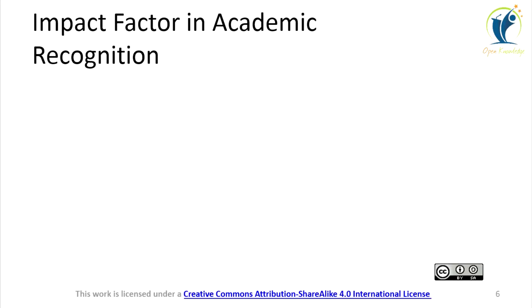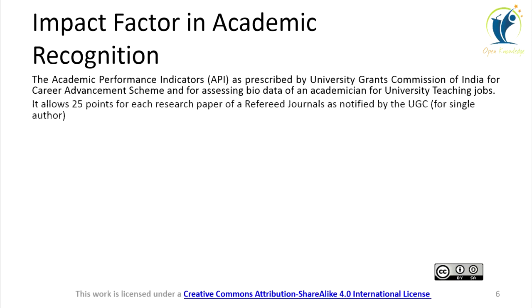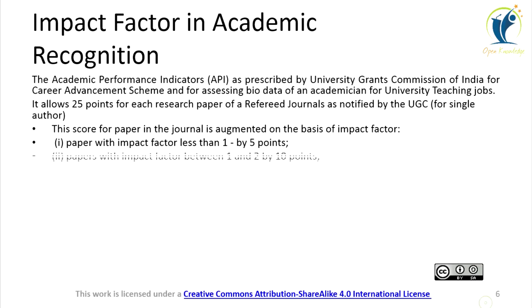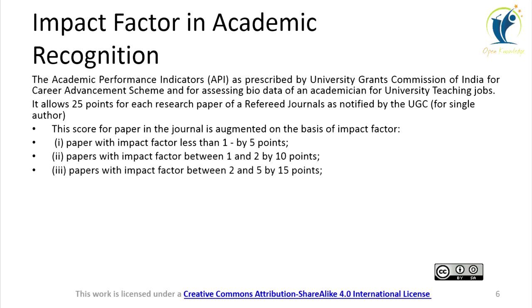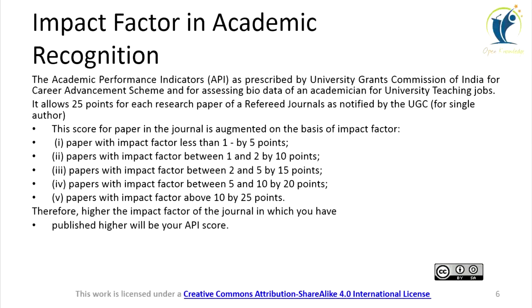Impact factor plays a role in academic recognition. The Academic Performance Indicators (API), as prescribed by the University Grants Commission (UGC) of India for the Career Advancement Scheme and for assessing the profile of an academician for university teaching jobs, allows 25 points for each paper in a UGC-notified reference journal. For a single author, this score is augmented based on impact factor: less than 1 adds 5 points; between 1 and 2 adds 10 points; between 2 and 5 adds 15 points; between 5 and 10 adds 20 points; and above 10 adds 25 points. So, the higher the impact factor of the journal in which you publish, the higher will be your API score.